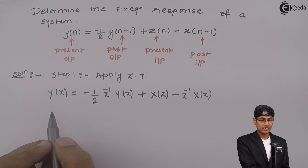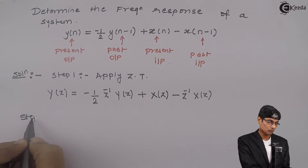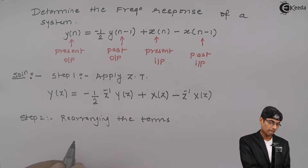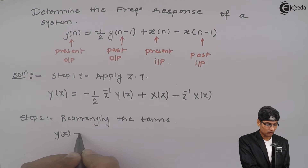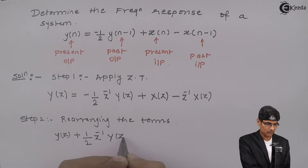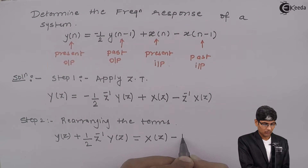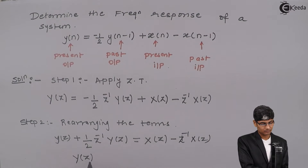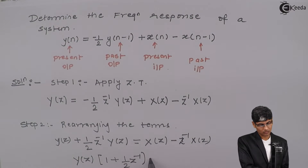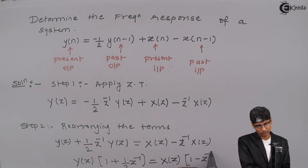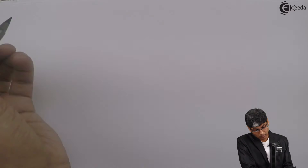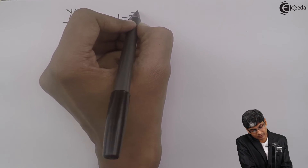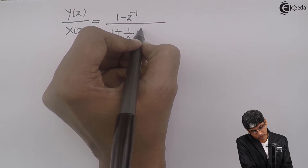Step 2: Rearranging the terms to find H(z). Moving the term to the other side, I get Y(z) plus 1/2 z⁻¹ Y(z) equals X(z) minus z⁻¹ X(z). Pulling out Y(z) common gives Y(z)(1 + 1/2 z⁻¹) = X(z)(1 - z⁻¹). Taking the ratio Y(z)/X(z) equals (1 - z⁻¹) / (1 + 1/2 z⁻¹).